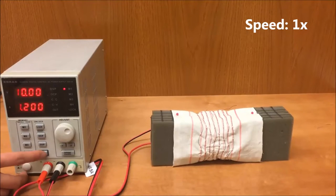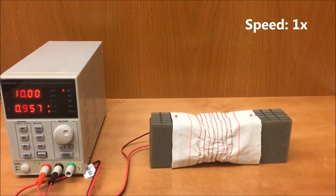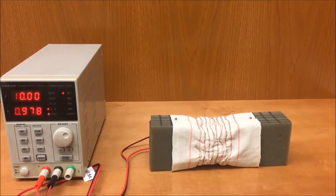In the second segment of this video, we wrapped the fabric around the foam block with the SMA aligned radially around it. When we heat the SMA, the foam block compresses.